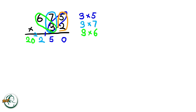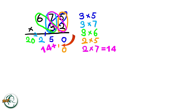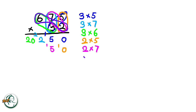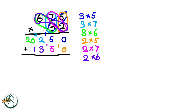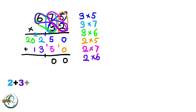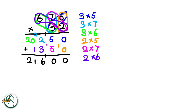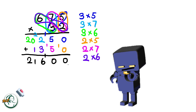Moving on to the other number, 2 multiplied by 5 is 10. We write down a 0 and carry over the 1. Next, we multiply 2 by 7, resulting in 14, and adding the carried over 1 to 14, we get 15. We write down a 5 and carry over the 1. 2 multiplied by 6 is 12, and adding the carried over 1 to 12, we get 13. Now, we add these two sets of products. Adding 0 and 0 gives us 0. 5 plus 5 is 10. Write 0 and carry over the 1, and 2 plus 3 plus the carried over 1 is 6. 0 plus 1 is 1, 2 plus 0 is 2. Therefore, the product of 675 and 32 is 21,600.